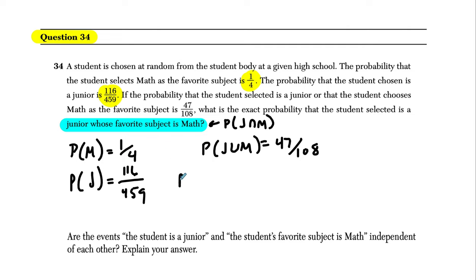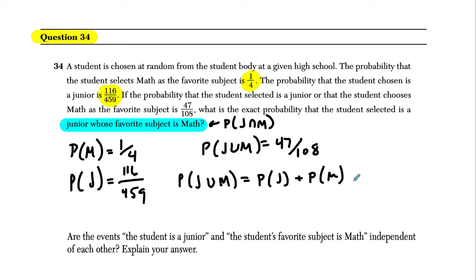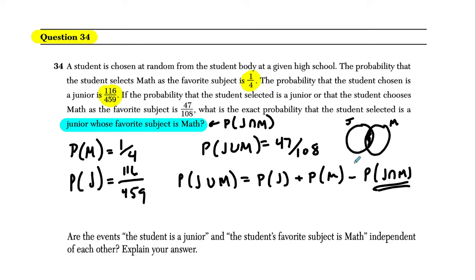For the OR statement, the union — that they are a junior or their favorite subject is math — equals the sum of the probabilities for junior and math minus their intersection. Think of the Venn diagram: you've got the probability that they're a junior and the probability that their favorite subject is math. You add them up, but when you double-count this intersection in the middle, you subtract it once because we've counted it twice and we just need it once. The Venn diagram is showing you that.